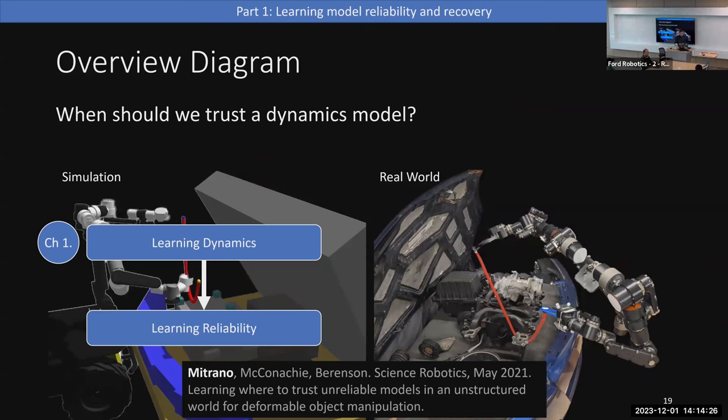Starting with chapter one, published in Science Robotics: we investigate how to learn dynamics and reliability starting in simulation. The main question is, when should we trust a dynamics model? The paper also explored what to do if you're in a state where the model is unreliable, but for the sake of time I won't discuss that part.